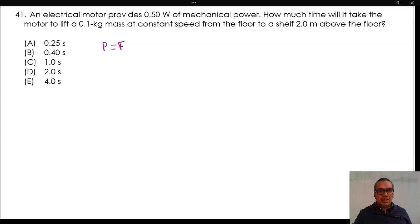If the speed is constant, power is equal to force times speed. Because this is a system in equilibrium, the force exerted is equal in magnitude to the weight of the mass.